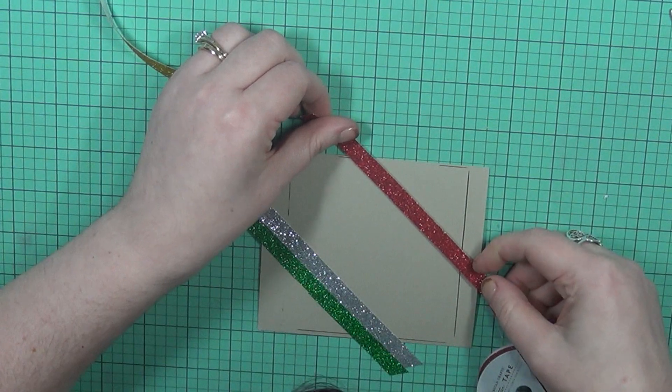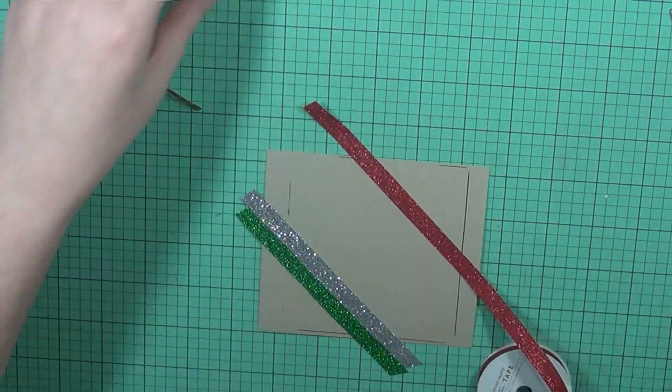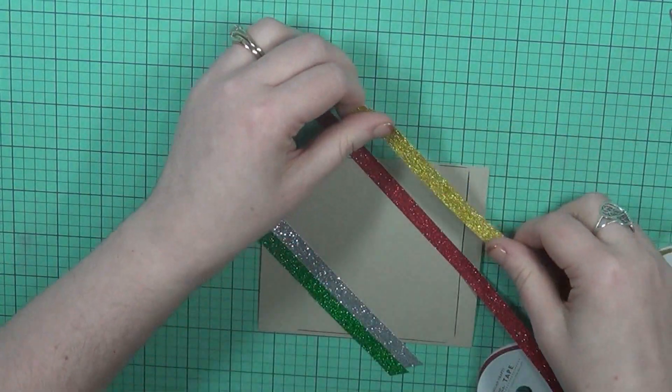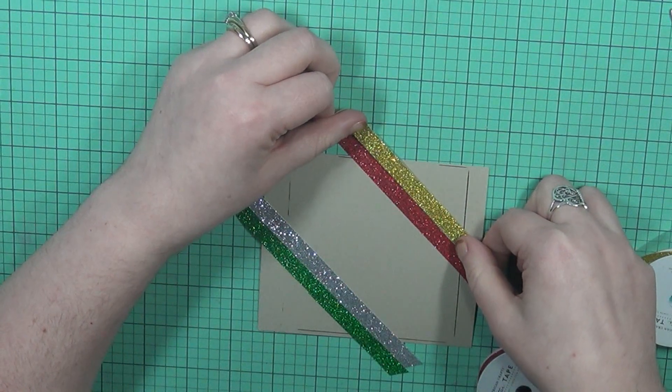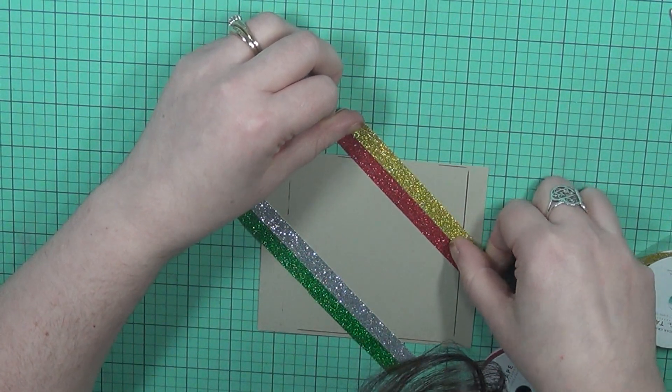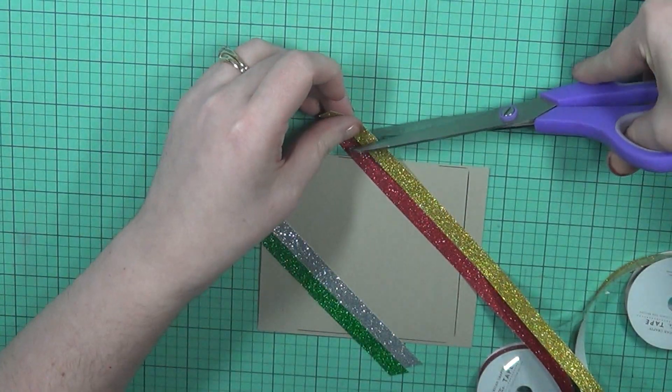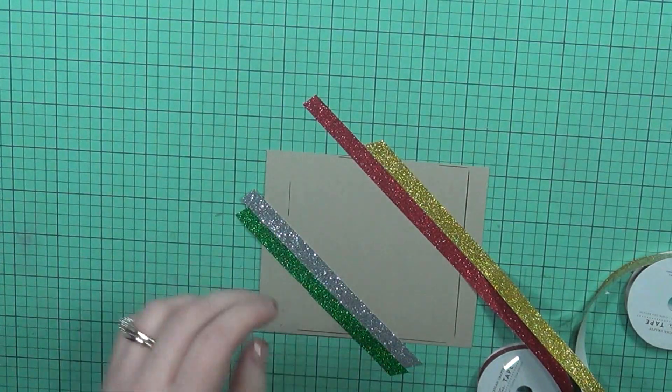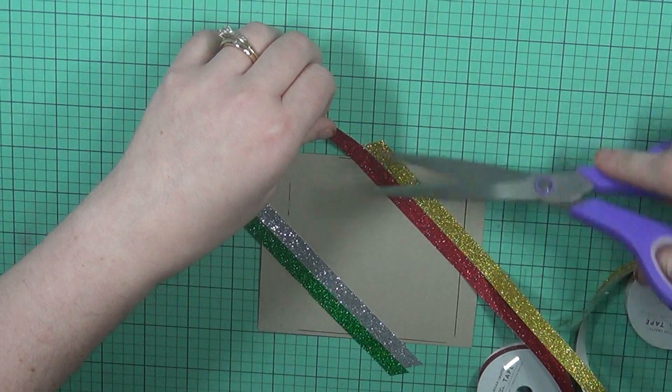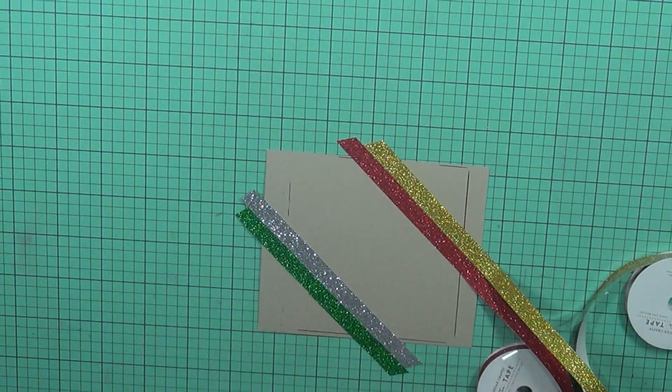And I'm just kind of eyeballing this. Now, if you're one of those that is more of a perfectionist, if you will, on something like this, you really want to make sure that you're getting it even by measuring it with your ruler or T ruler and your pencil, by all means, go ahead and do that. But for me, I'm usually pretty good. I feel that I'm just eyeballing these types of things. So that's what I'm doing here. I'm just eyeballing it.